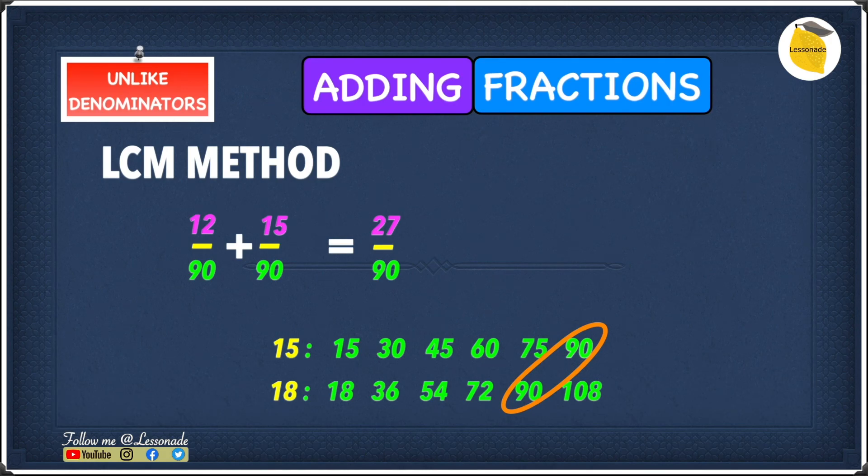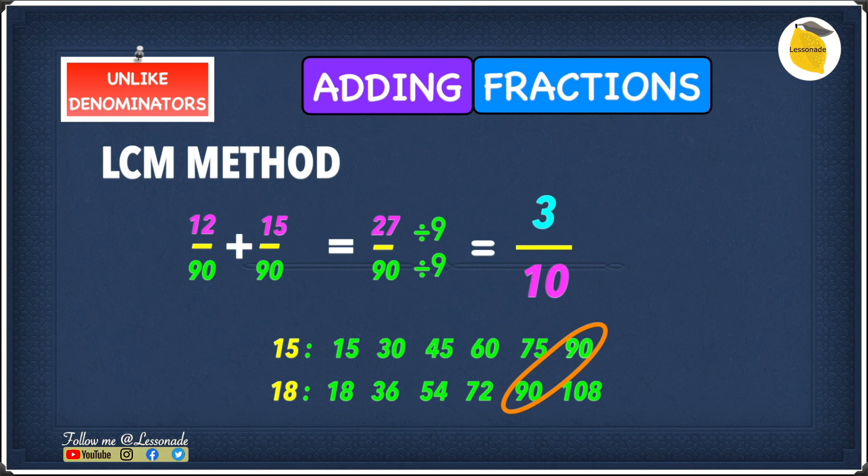The highest common factor for both 27 and 90 is 9. This means we have to divide 27 and 90 by 9. So 27 divided by 9 is 3, and 90 divided by 9 is 10. This means our answer to this question is 3 over 10.